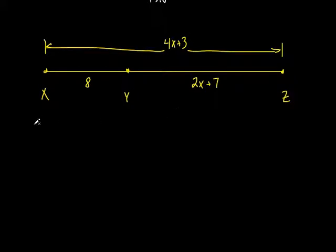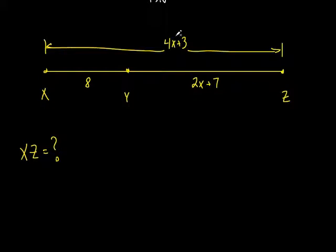They ask you to find the length of XZ, so XZ equals question mark. Which one is XZ? It's the whole entire thing. I kind of know the whole thing — it's 4X plus 3 — but my only problem is I've got to find X. So I've got to set up some kind of algebra problem in order to solve for X.